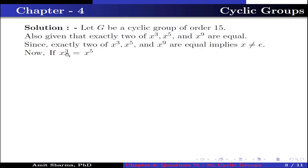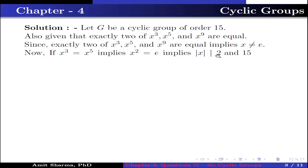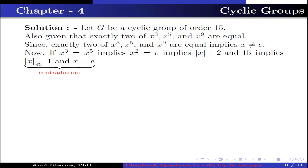If X³ = X⁵, then X² = identity. This implies the order of X divides both 2 and 15. Since the order of an element divides the order of the group, the order of X must be 1, meaning X equals the identity — which is a contradiction.